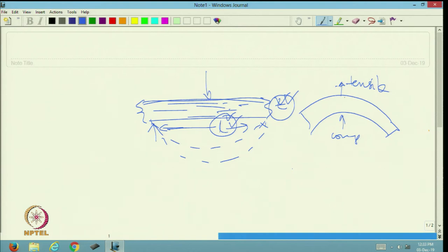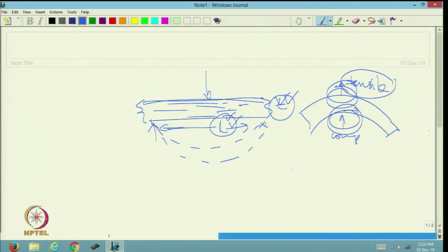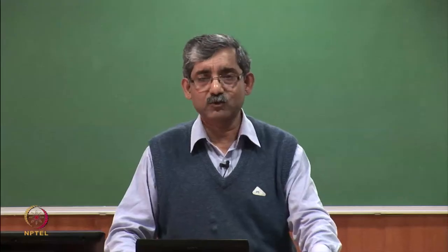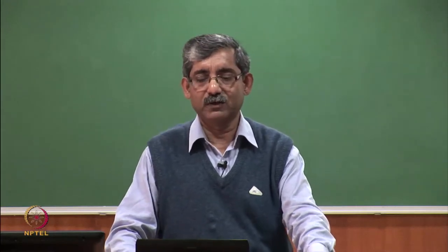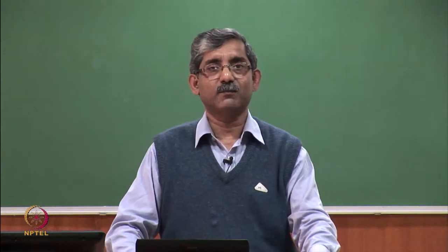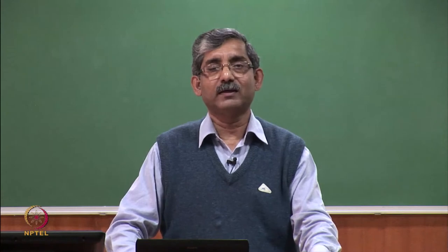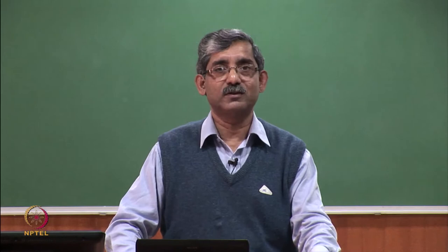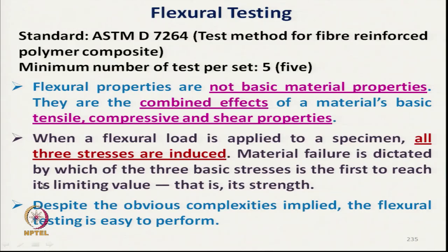Material failure during bending is dictated by which of the three basic stresses — tensile, compressive, or shear — first reaches its limiting value (strength). If tensile strength is low, failure occurs on the tensile side; if compressive strength is low, failure occurs on the compression side. Understanding flexural testing is complex, but performing the test itself is simple.